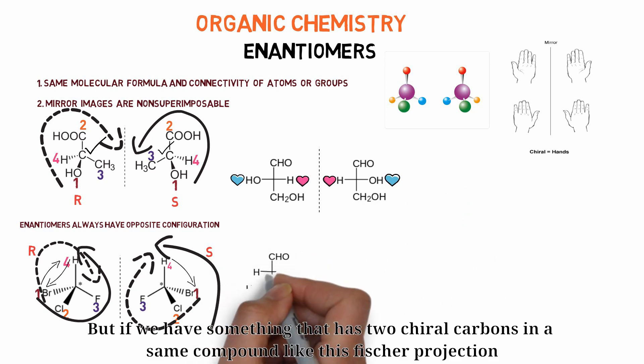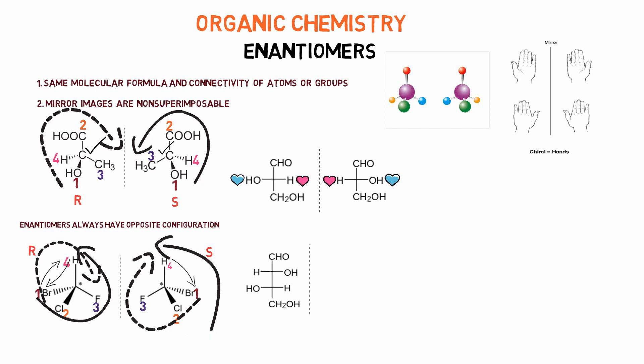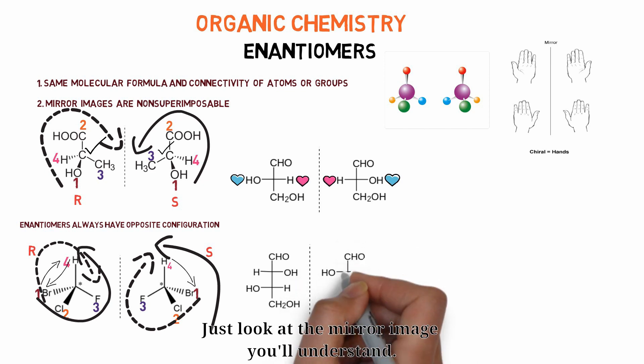But if we have something that has two chiral carbons in the same compound like this Fischer projection, we have to reverse both the groups to draw the enantiomer. Just look at the mirror image, you will understand.